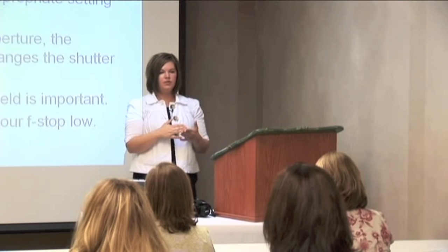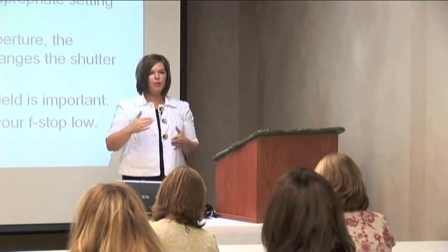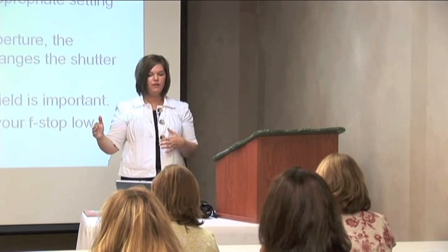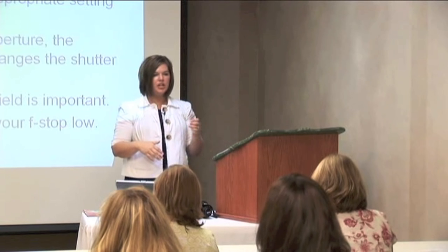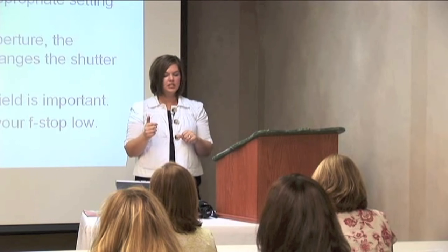The next thing we're going to talk about is on your camera — it's A, and on every camera it's a little different. Sometimes it's AV; on the Nikon it's an A, and that stands for aperture priority. If you want to shoot at a certain aperture, you set it in aperture priority and the camera automatically chooses the shutter speed setting to achieve the exact exposure needed. Every time you change the aperture, the camera automatically adjusts the shutter speed.